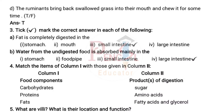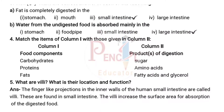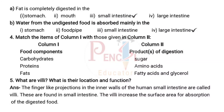Third main: Tick the correct answer. A) Fat is completely digested in the small intestine. B) Water from the undigested food is absorbed mainly in the large intestine. Fourth main: Match the items of column one with those given in column two — the items of column one and column two are matched.